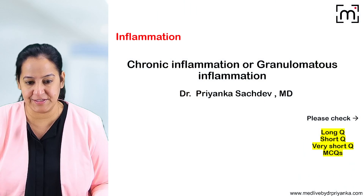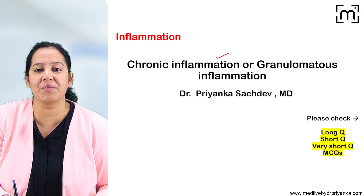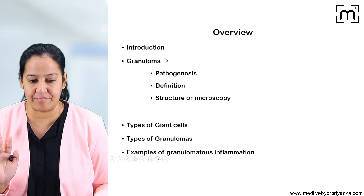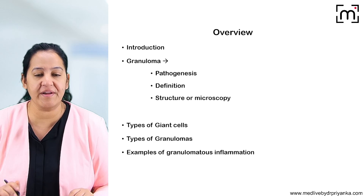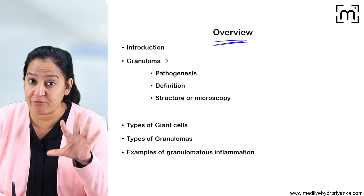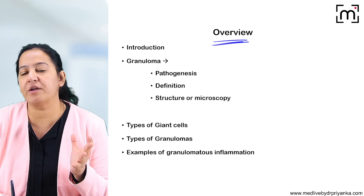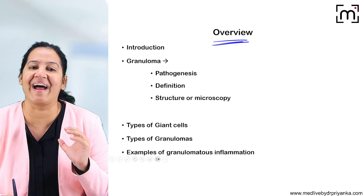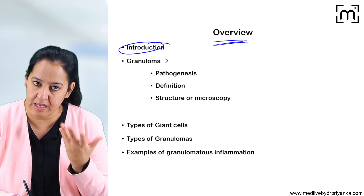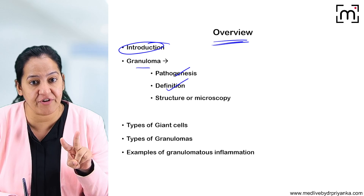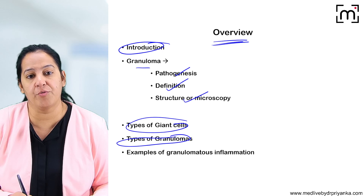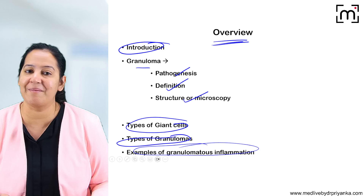Let's start the topic: chronic inflammation, also known as granulomatous inflammation. Chronic inflammation and granulomatous inflammation are one and the same thing. If the question is on chronic or granulomatous, you write the same answer. For a long question, frame your answer under these headings: introduction/definition of chronic inflammation, then granuloma — its pathogenesis, definition, structure/microscopy, types of giant cells, types of granulomas, and examples of granulomatous inflammation.